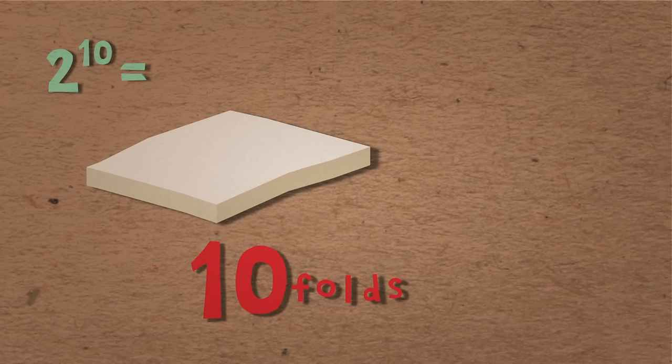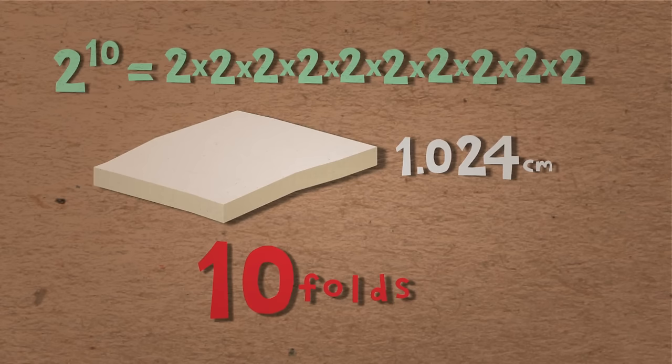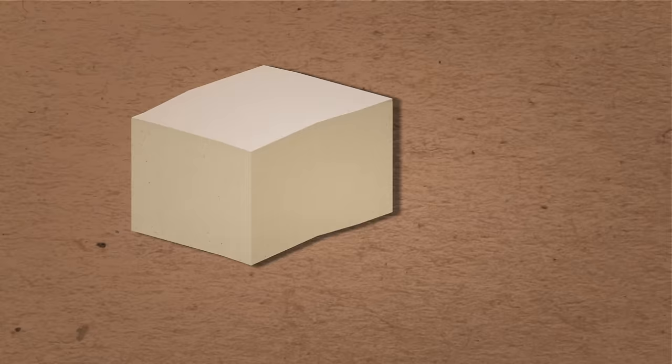2 to the power of 10, meaning that you multiply 2 by itself 10 times, is 1,024 thousandths of a centimeter, which is a little bit over 1 centimeter.